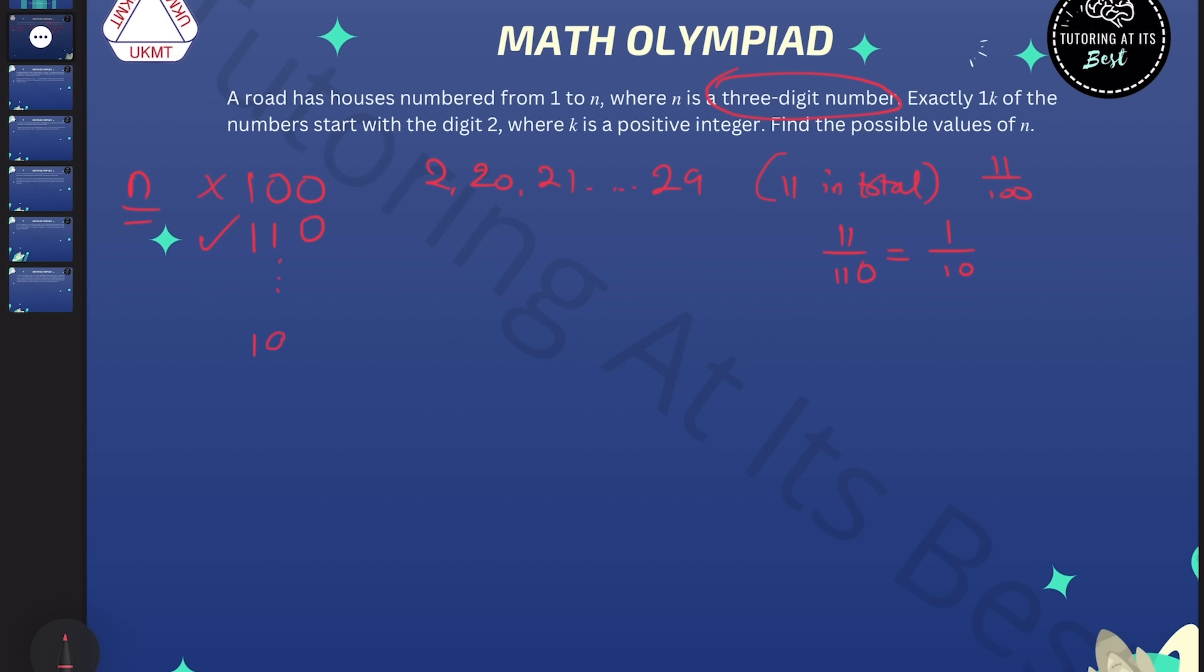And we can carry on with all of the values of n that are multiples of 11. And let's go to 198. That would give us 11 over 198, which is equivalent to 1 over 18. And there we have our first nine numbers.